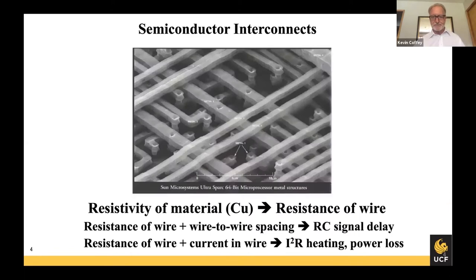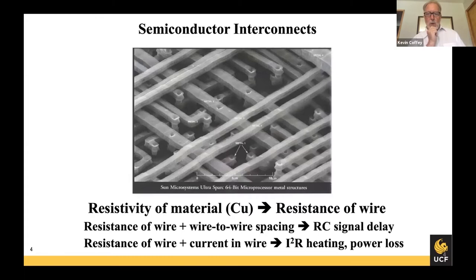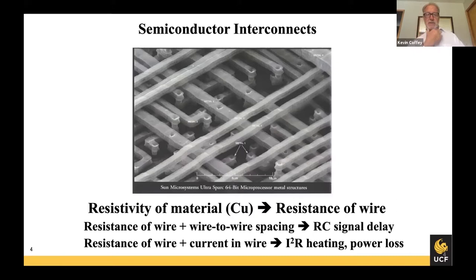Semiconductor interconnects — we all know there are billions or trillions of devices on a wafer, packed very tightly, but they're also wired one to another. A basic transistor is a three-wire device: current in, current out, and a switching current at the gate. This is a very old image of roughly one-micron-size wires, but it gives you an idea of the three-dimensional network that exists. The spaces between the wires are filled with SiO2 or some variation thereof — a dielectric. In this particular image, the SiO2 was etched away, leaving just the copper wires.